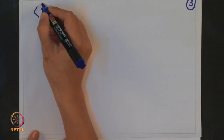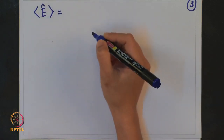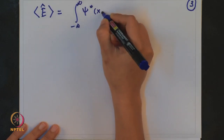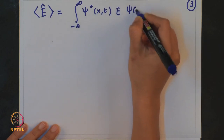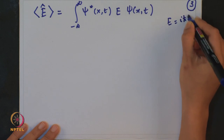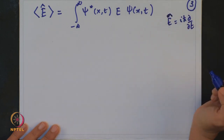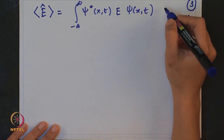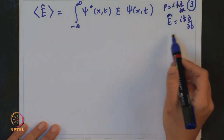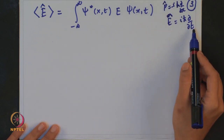Now let us go to the second part of the problem. You are asked to find out the expectation value of energy. The standard way of writing this involves ψ*(x,t) E ψ(x,t). The energy operator E can be written as iℏ ∂/∂t. As you know, the momentum operator is –iℏ ∂/∂x and similarly the energy operator is iℏ ∂/∂t.